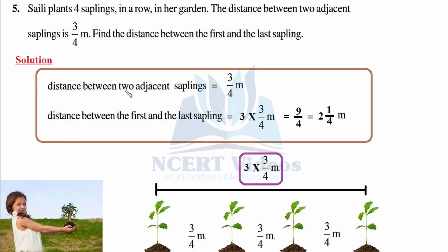With 4 saplings, there are 3 gaps — gap 1, gap 2, and gap 3. So we multiply 3/4 by 3. Do not confuse it with 4; whenever there are 4 saplings, there are only 3 gaps. You must visualize this, and the picture helps. Always remember it is the number of saplings minus 1.